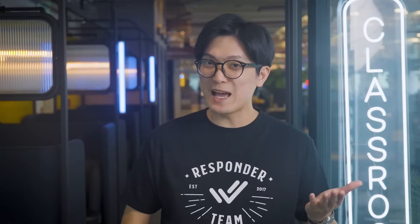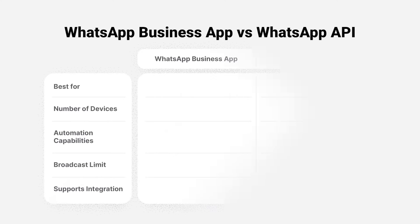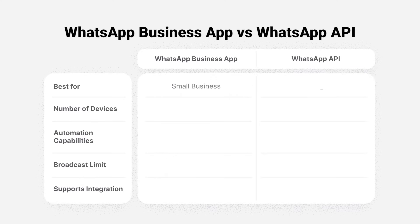You're probably wondering what's the difference between WhatsApp Business App and the API. Basically, WhatsApp Business App is intended for micro to small businesses, as it comes with limited multi-user, broadcast, and automation capabilities. This makes it difficult for you to chat at scale.